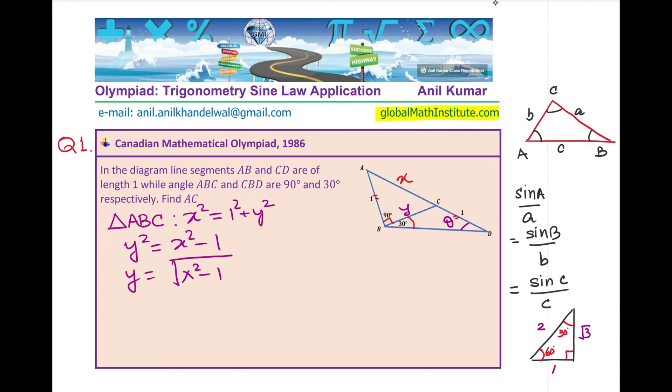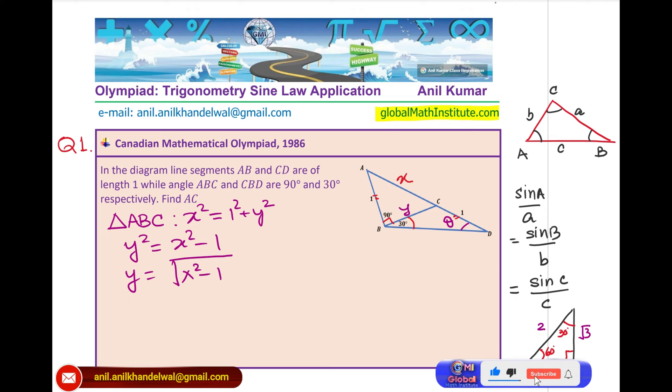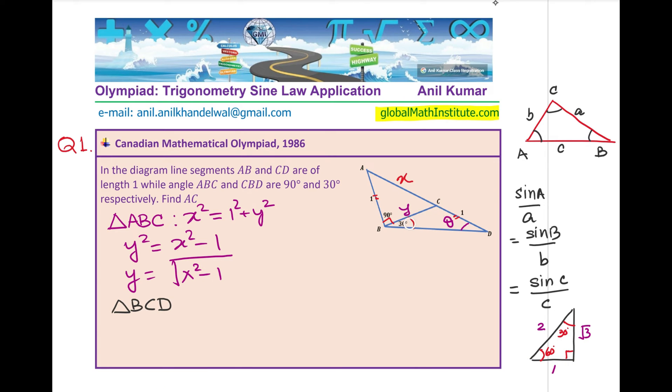Now, we can apply the sine law in triangle BCD. So, if I look into triangle BCD, which is not a right-angled triangle. So, we can apply the sine law here. We know one combination of side opposite to angle of 30 degrees. And, we can relate Y and theta.